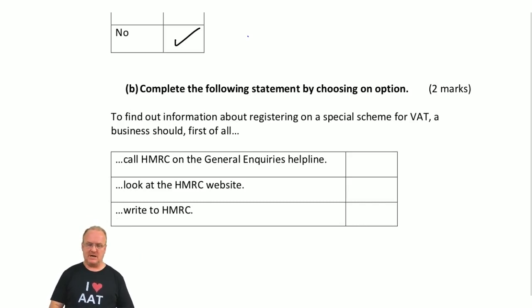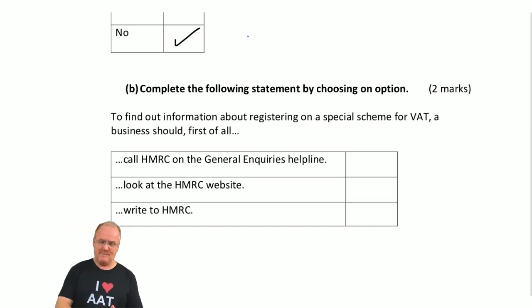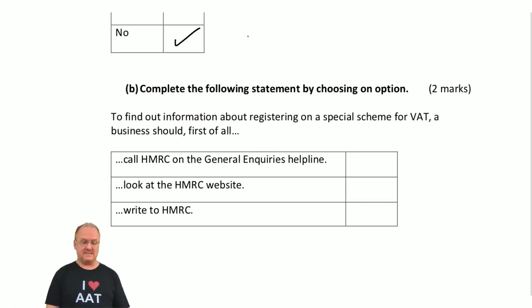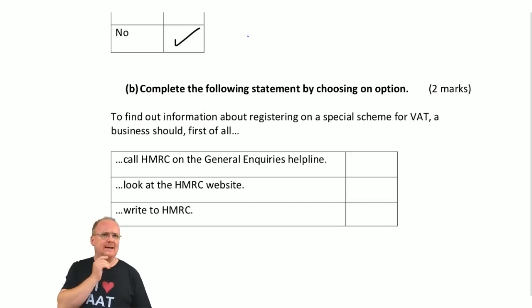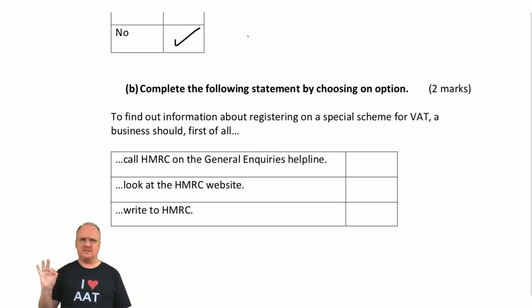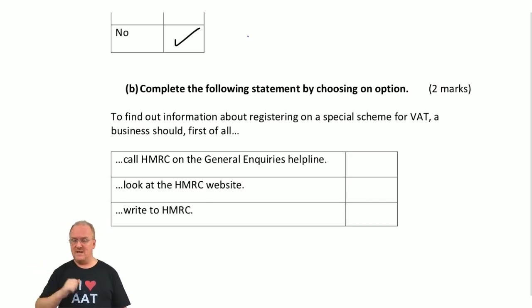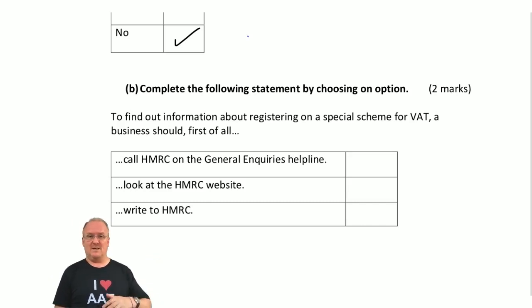Then we get on to part B, which says: complete the following statement by choosing an option. To find out information about registering on a special scheme for VAT, a business should first of all do what? The options are: call HMRC on the general enquiries helpline, look at the website, or write to HMRC. Now, there are three ways you could approach this: if you know the HMRC rules you'll know the answer; secondly, maybe it's in the reference material, which is 30 pages long — so please don't just turn up on exam day assuming you'll find things without having looked through it first.